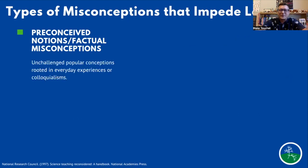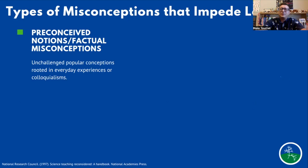The first group are preconceived notions or factual misconceptions — unchallenged popular conceptions rooted in everyday experiences or colloquialisms, common sayings in the culture. These are very common, and students come in with a lot of these because they are things that they have experienced. Because of their anecdotal experiences, they think they have a good, fully formed concept of the phenomenon they're observing, when in actuality they might be mistaken.